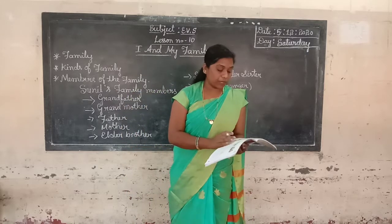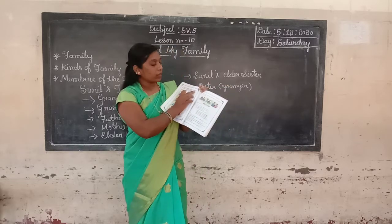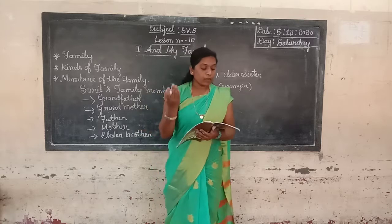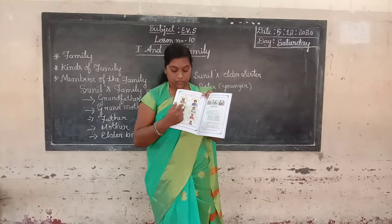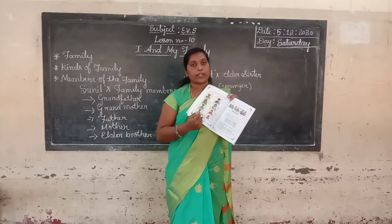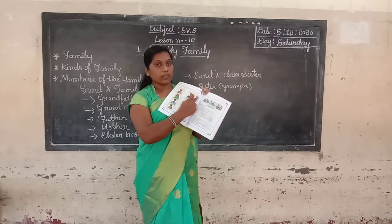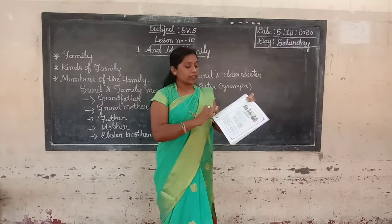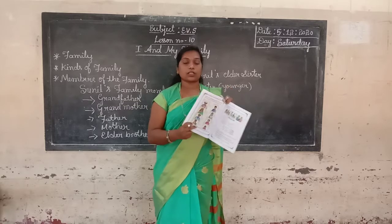Now turn to page number 63. Students, observe the pictures given below and put a right mark in the box provided if you have them in your family. If you have a grandma, put a right mark. If you have a father, put a right mark. If you have a mother, put a right mark. And for elder brother, elder sister, younger brother, or younger sister — put a right mark in the provided box.